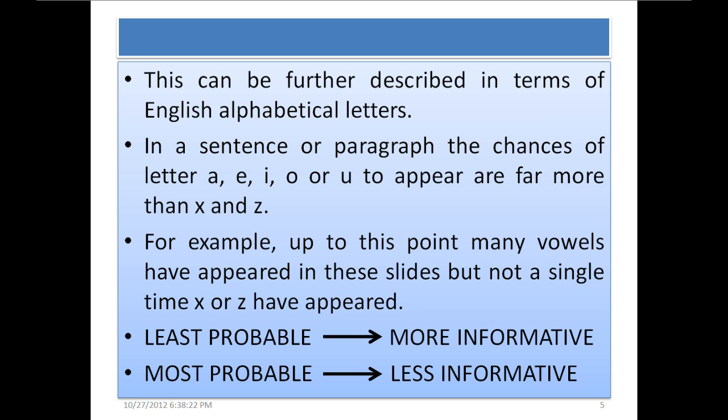This can be further described in terms of English alphabetical letters. In a sentence or paragraph, the chances of letter A, E, I, O or U to appear are far more than X or Z. Up to this point many vowels have appeared in these slides but not a single time X or Z have appeared. We can summarize this: least probable means more informative and most probable means less informative.